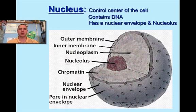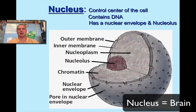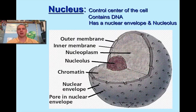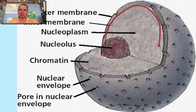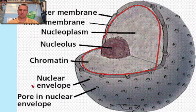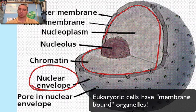I think of it as the brain — it controls all the activities within the cell. DNA is found in the nucleus. DNA can't leave the nucleus. That's the reason we're going to, later on, make RNA for the purpose of leaving the nucleus. So DNA is in the nucleus, and it has what we call a nuclear envelope and a nucleolus. The nuclear envelope is simply the membrane surrounding the nucleus — the nucleus is a membrane-bound structure.